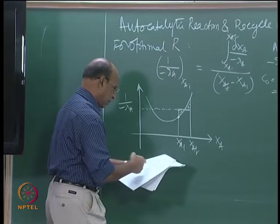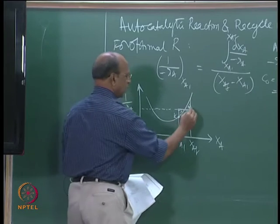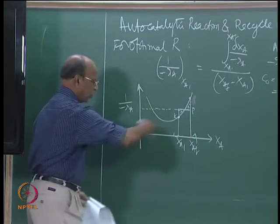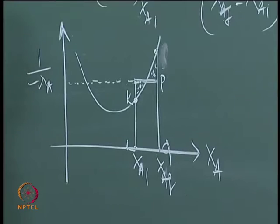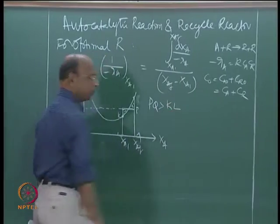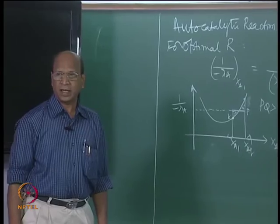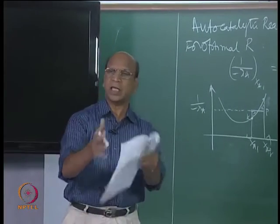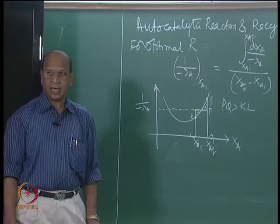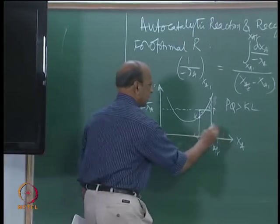Now, suppose PQ is greater than KL — that means the rate at entry is less than the average rate. In this case, are you moving towards plug flow or towards mixed flow? Towards mixed flow. That means R must be more than the optimal value. So here, this is R large — this is not optimal.